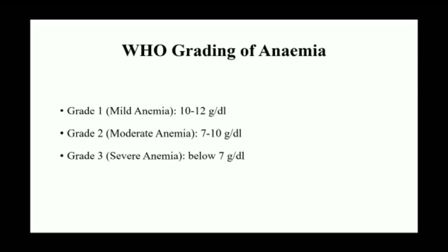WHO grading of anemia severity cases mein di gayi hai: mild, moderate aur severe. Mild ke andar 11 to 12 gram per dL, moderate ke andar 7 to 10 gram per dL, aur severe mein below 7 gram per dL hota hai. Below 7 — jaise 6.9 ya 6.5 — is severe condition mein patient ko blood transfusion karna padta hai.